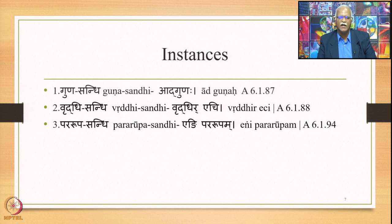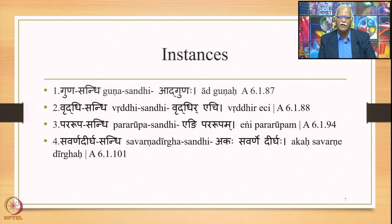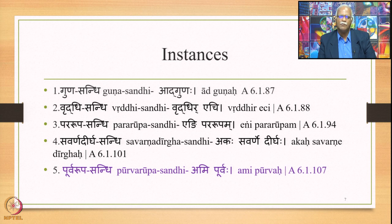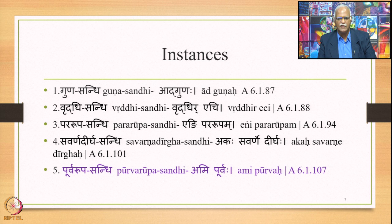The fourth instance is Savarana Dirghasandhi, stated by the Sutra Akas Savarane Dirghaha 6.1.101. And finally, the fifth is Purvarupasandhi, stated by the Sutra Amipurvaha 6.1.107 onwards. These fundamentals about Ach Sandhi — the two basic types and the instances of each type — are repeated here for the sake of convenience, and the repetition should bring greater clarity.